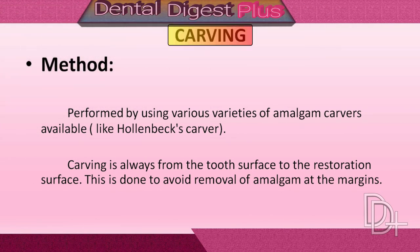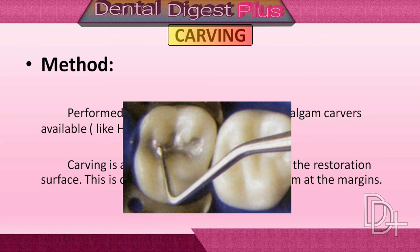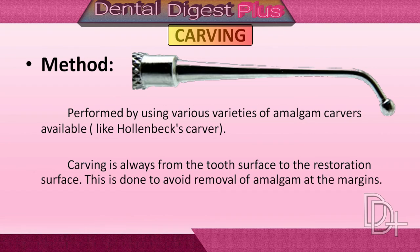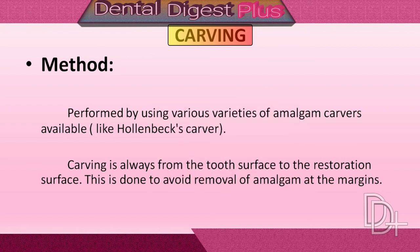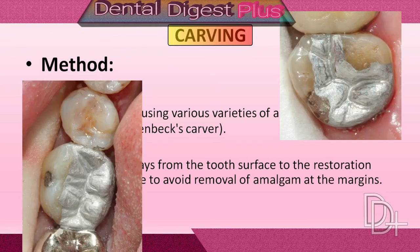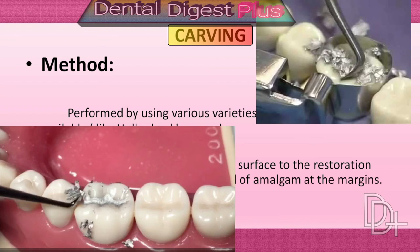Carving. Before starting carving of the restoration, pre-carving burnishing is carried out using a large ball burnisher for 15 seconds. Use slight force and move from the center of the restoration to the margins. This is a continuation of condensation and reduces the size and number of voids on the critical surface and marginal area. After the amalgam has been condensed into the prepared cavity, the restoration is carved to reproduce the proper tooth anatomy. Using remaining enamel as a guide, carving is carried out gently from enamel towards the center to recreate the lost anatomy of the tooth.